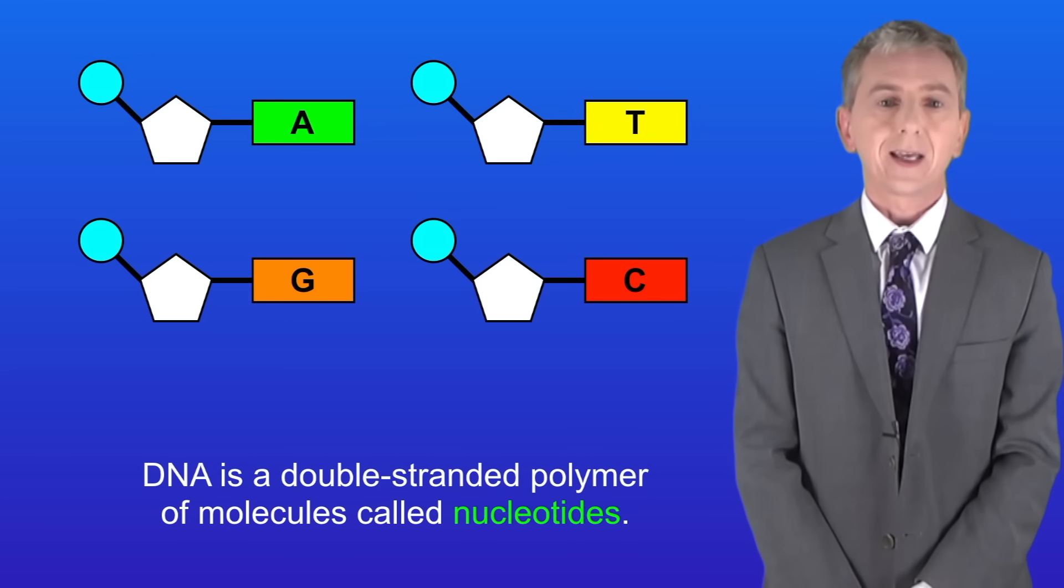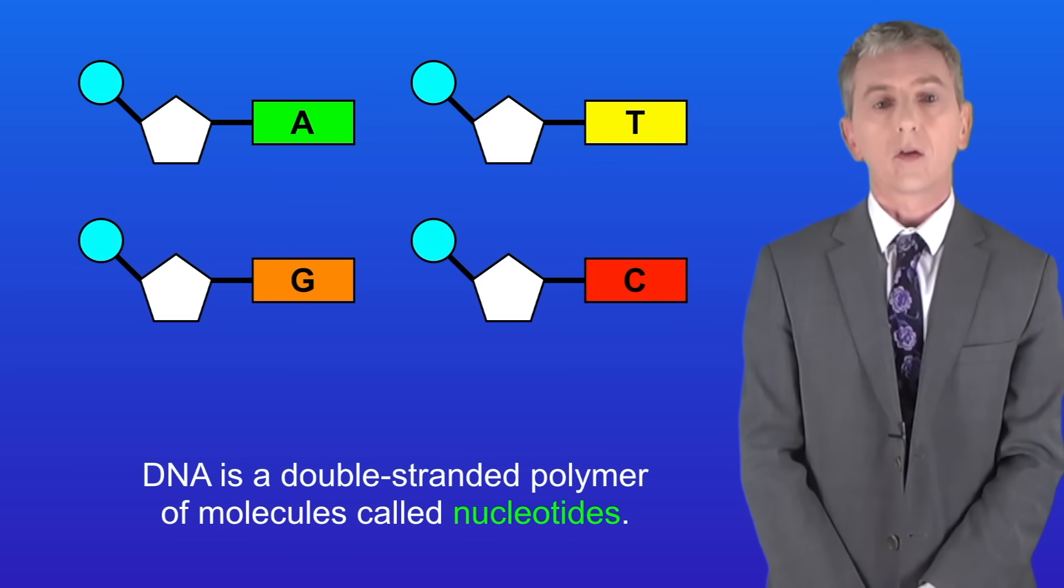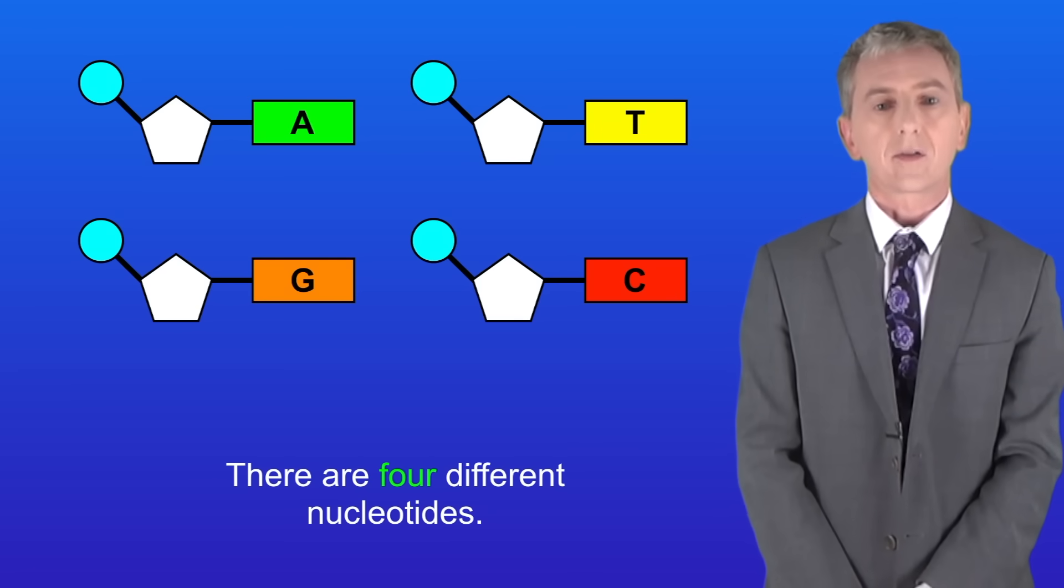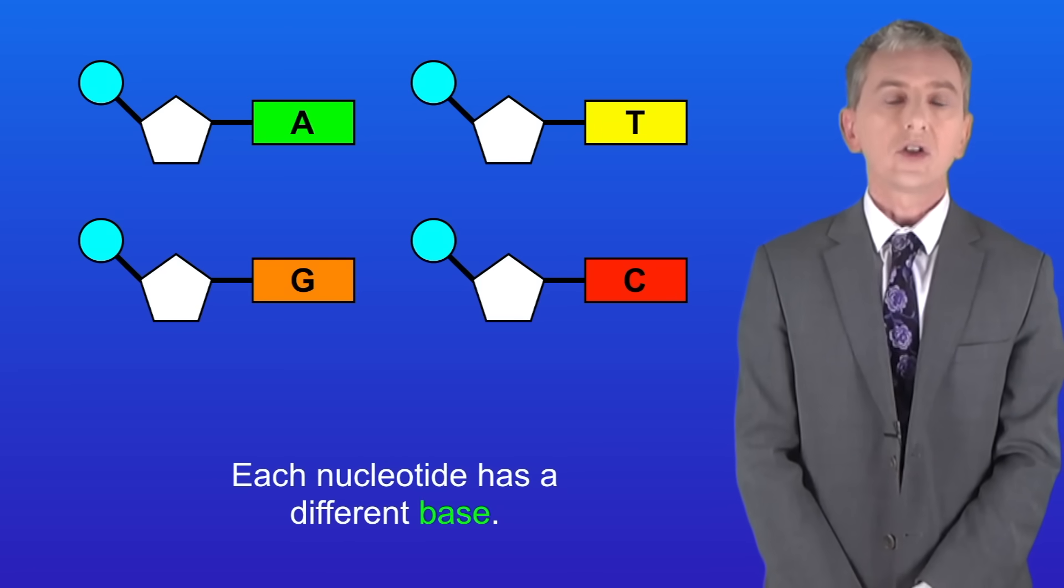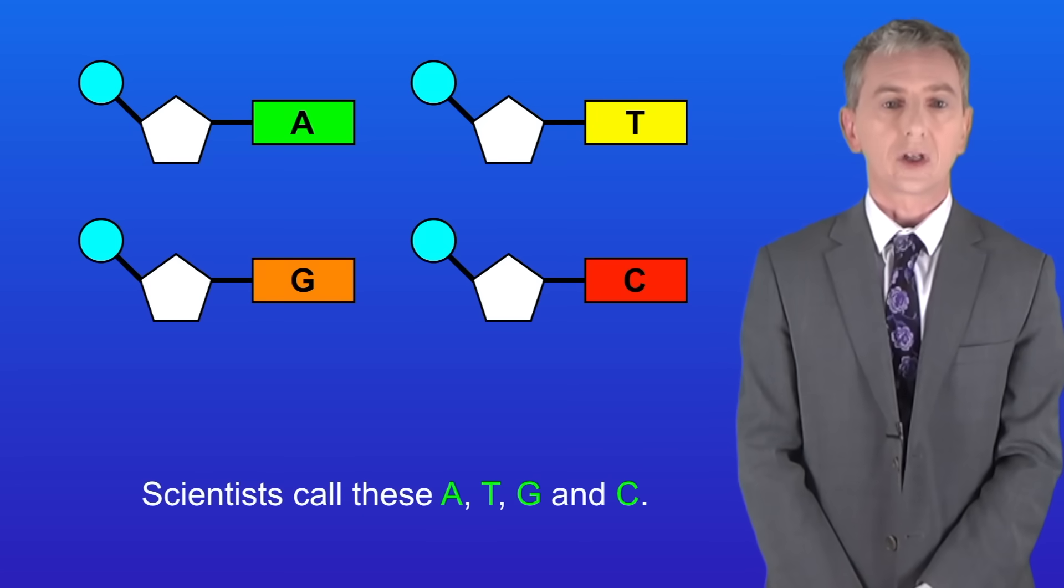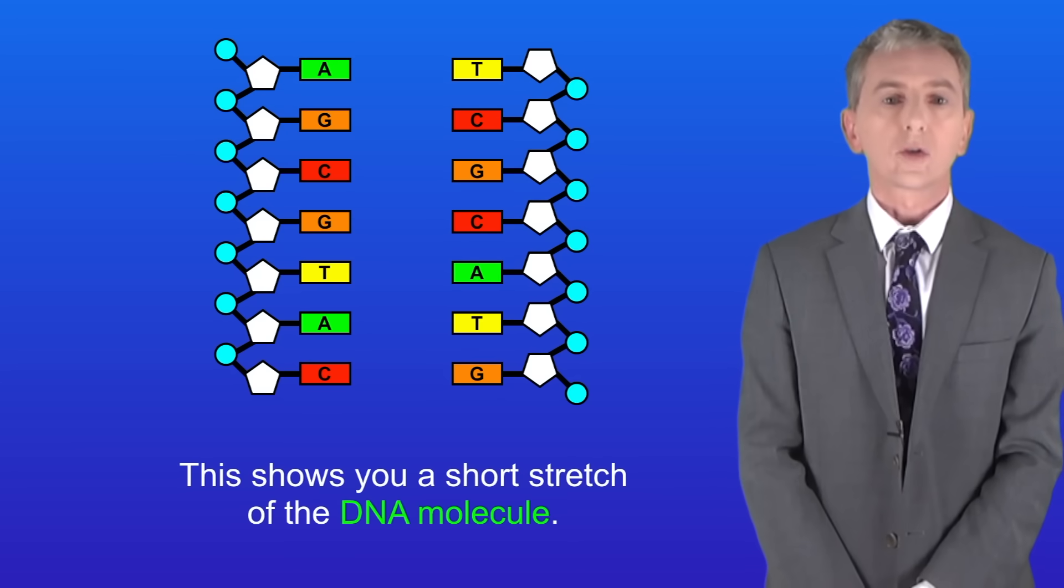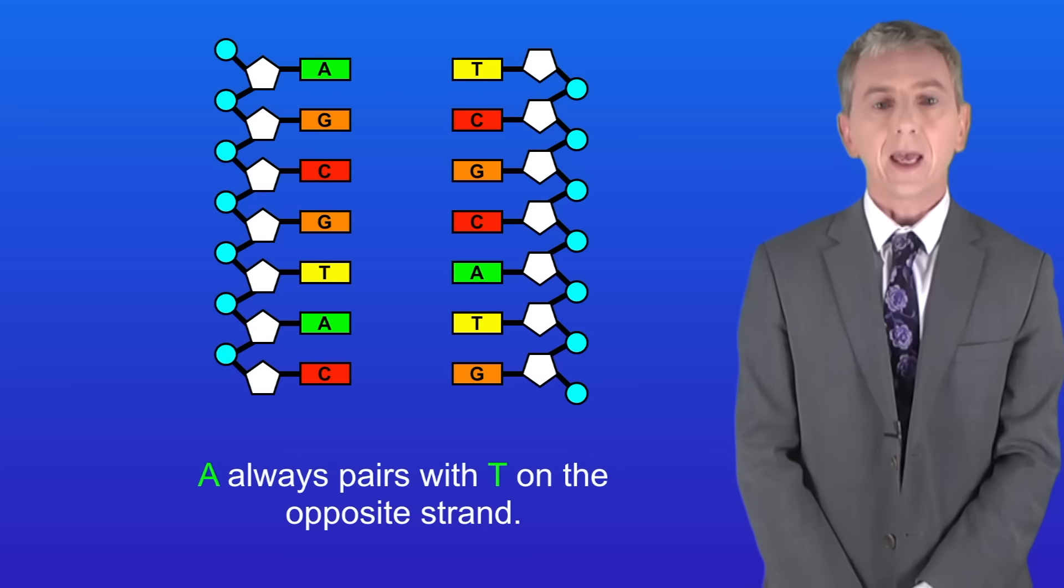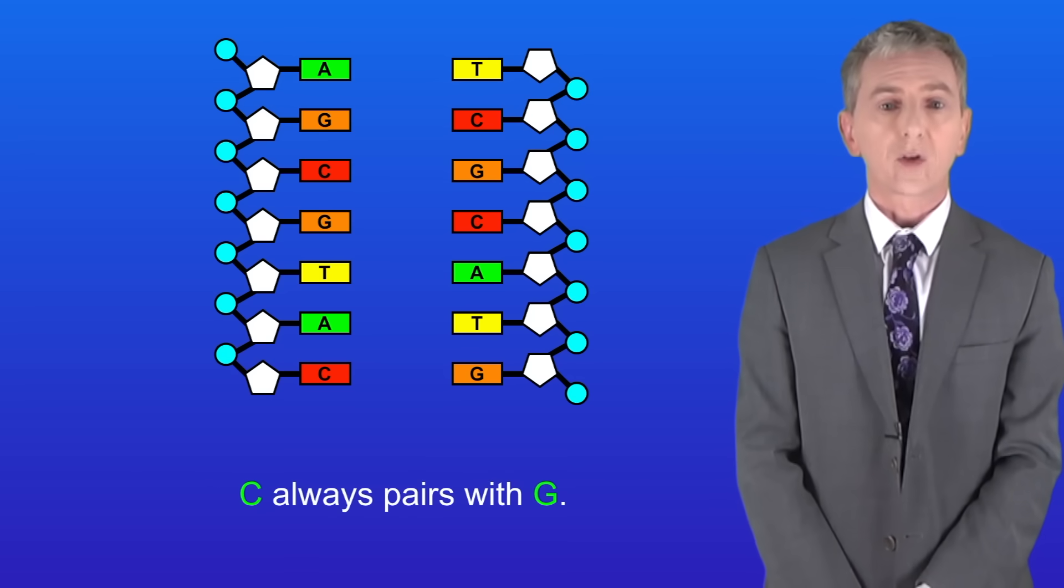In the last video we saw that DNA is a double-stranded polymer of molecules called nucleotides. There are four different nucleotides and I'm showing them here. Each nucleotide has a different base, and scientists call these A, T, G, and C. This shows you a short stretch of the DNA molecule. Remember that the two strands are complementary, as A always pairs with T on the opposite strand, and C always pairs with G.